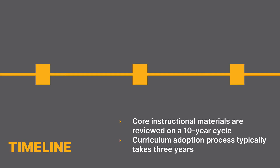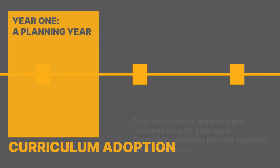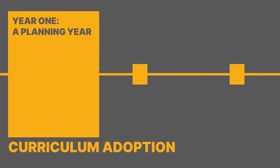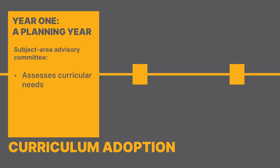Core instructional materials are reviewed on a ten-year cycle. The adoption process typically takes three years. Year one is a planning year. During this time period, the subject area's curriculum advisory committee assesses the curricular needs of the subject area and develops the selection criteria to be used in considering materials.